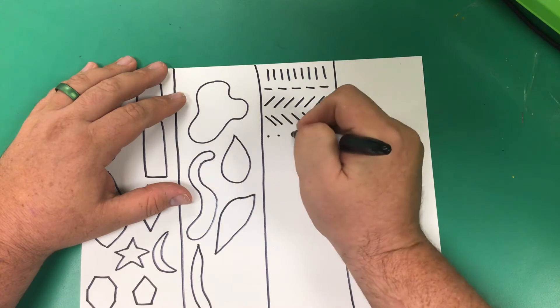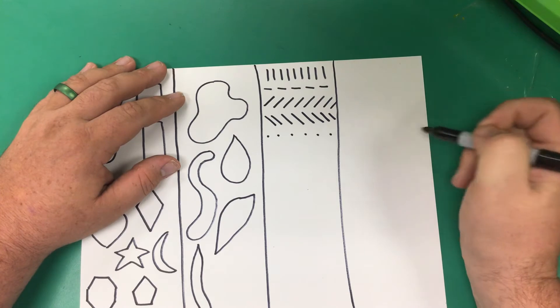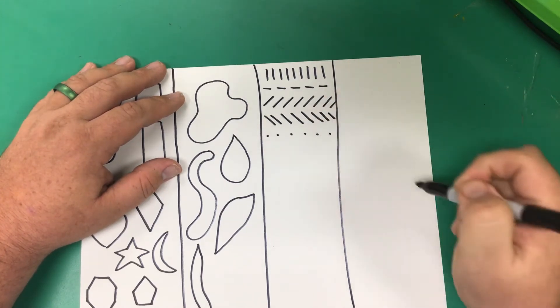And then we're going to do, oh this one's just so hard. Dot, dot, dot. Dots are in the line family. So we're going to make a row of dots.